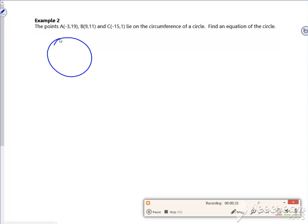I don't think it's going to work as well. The numbers don't seem to work, do they really? So minus 15, 1 might be there, so that could be C. Minus 3, 19 could be there. And then 9, 11 could be there, I guess. So we'll just try to put it in.